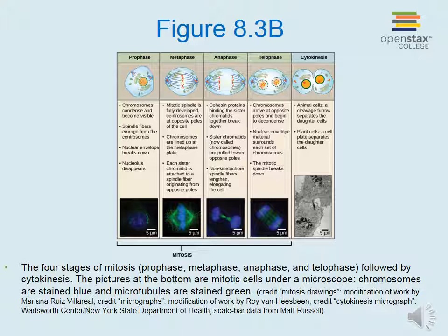During cytokinesis, the cell gets split down the middle to result in two daughter cells that each have a nucleus with a full set of chromosomes. The pictures at the bottom show mitotic cells under a microscope — the chromosomes are stained blue and the microtubules are stained green.